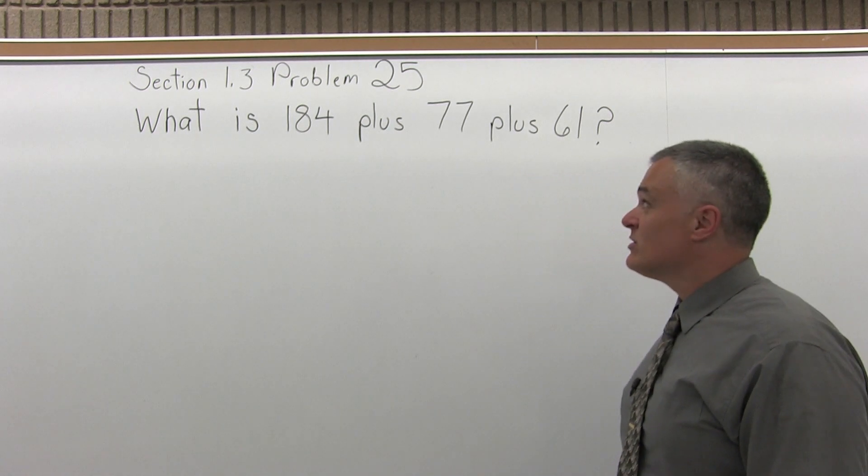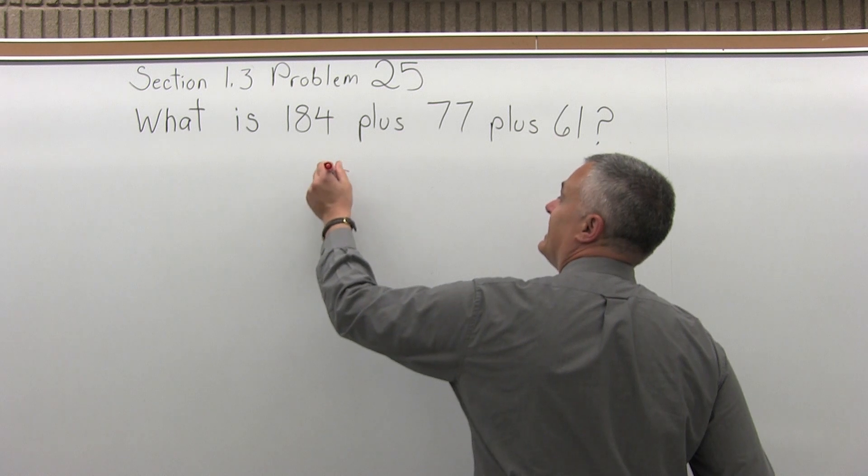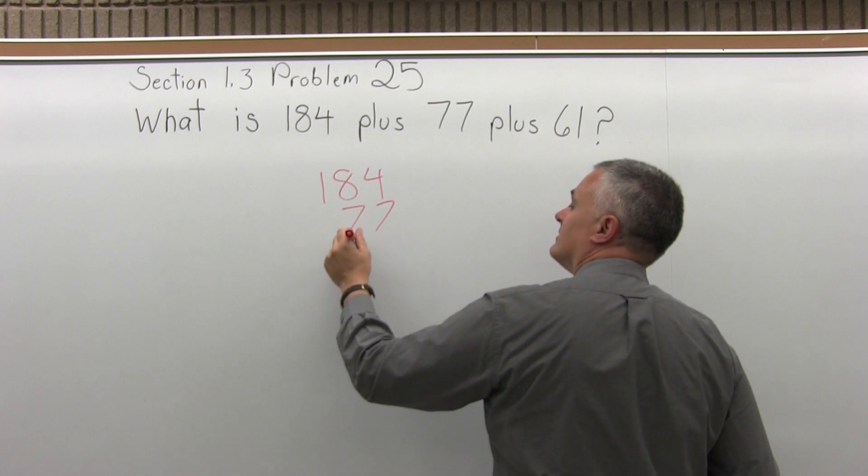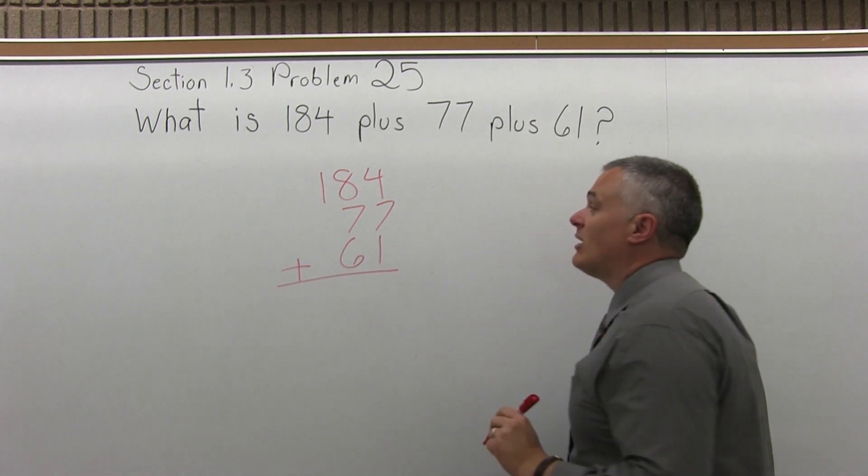So what we have to do is add those numbers together. I'll add 184 and then 77 and 61, but plus. And now I'll just add them together.